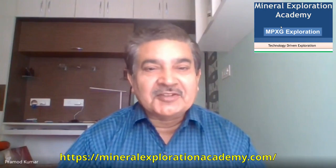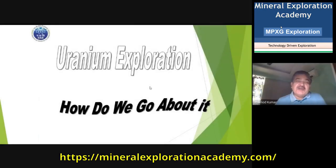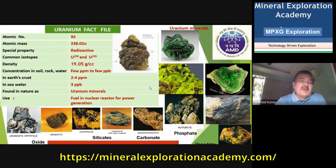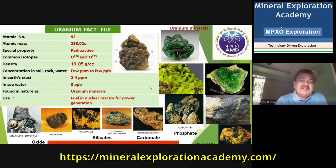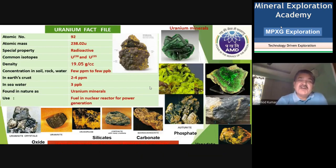Welcome, Pramod ji. Thank you very much. Today we are going to discuss the techniques of uranium exploration. Uranium, whose atomic number is 92 and atomic mass is nearly 238, has the special property that it is a radioactive mineral — it emits radiation of alpha, beta, and gamma — and this is one of the qualities we utilize in searching for uranium and all atomic minerals.